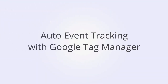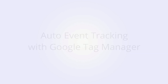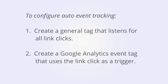Now we'll look at auto or automatic event tracking within Google Tag Manager that will allow us to track our event without actually changing the code on the page. To configure auto event tracking, we're actually going to create two separate tags. The first tag will just generally listen for link clicks on the page. The second tag will be our actual Google Analytics event tag, which will use the link click as a trigger.